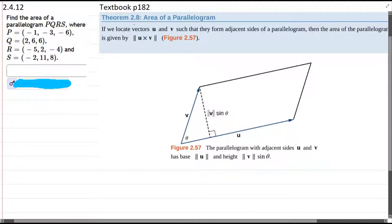We start out with points not vectors. So if this is our parallelogram with four vertices or four points here, we have P, Q, R, and S.